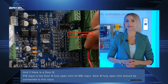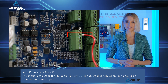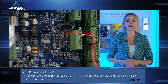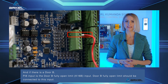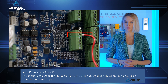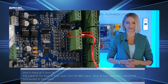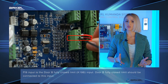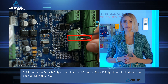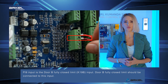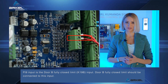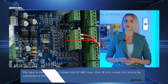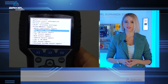If there is a door B, PI8 input is the door B fully open limit (K16B input) — door B fully open limit should be connected to this input. PI9 input is the door B fully closed limit (K19B input) — door B fully closed limit should be connected to this input. For all connection types, 100 — in other words, plus 24 — should be used for the common supply of the limit switches.